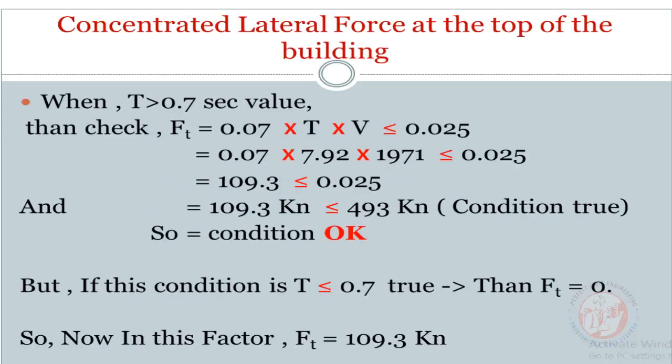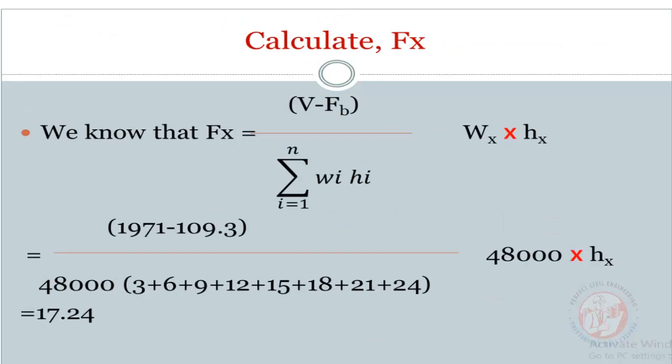Now we take the concentrated lateral force at the top of the building and calculate Ft. If T equals 0.7 seconds, 0.07 times T times V is greater than or equal to 0.025, the condition is okay. So Ft equals 109.3 kilonewtons.